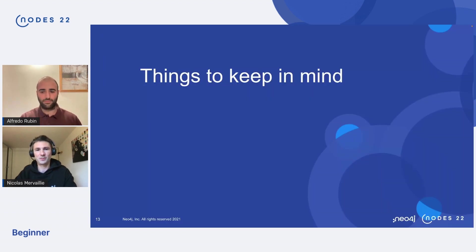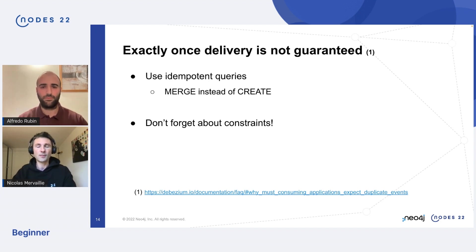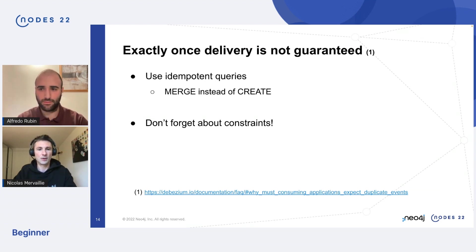Thanks, Alfredo. Just a couple of things to keep in mind when setting up this kind of architecture. During normal operations, exactly-once delivery is expected, meaning one transaction or one change in a table will translate into one event, arriving in order. However, when things go wrong, it's possible to receive the same event twice. So within the Cypher queries in the Neo4j Kafka Connect plugin configuration, you need to use MERGE instead of CREATE, along with constraints to avoid creating the same entity twice.